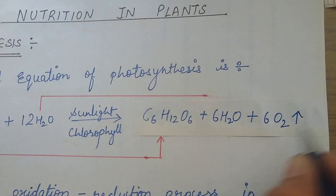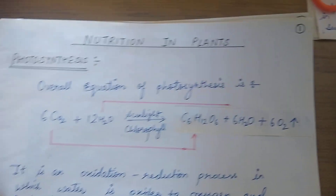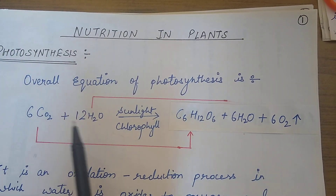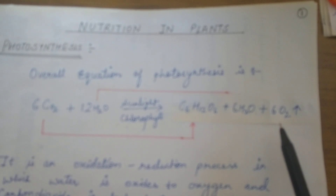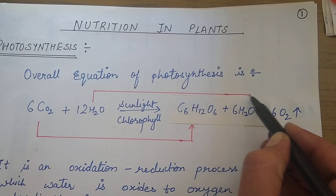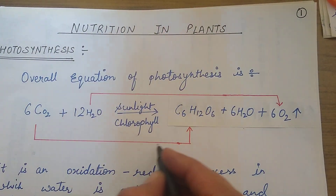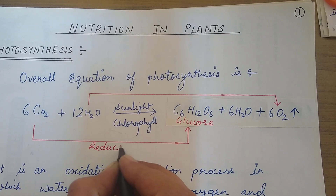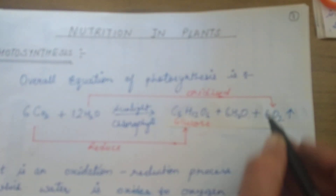The oxygen gas released in this process — which raw component is responsible for it? It is water. Water is responsible for forming oxygen because water is oxidized to oxygen and CO₂ is reduced to glucose. CO₂ is reduced to glucose and water is oxidized to form oxygen.